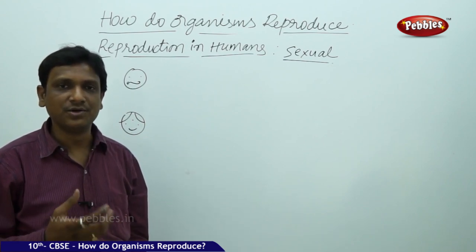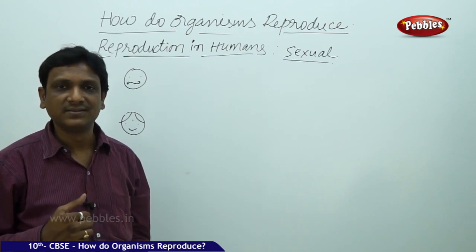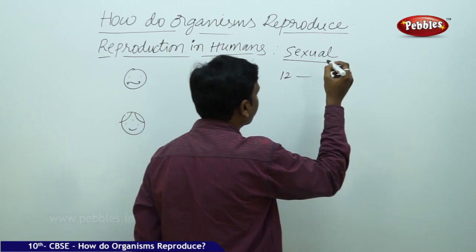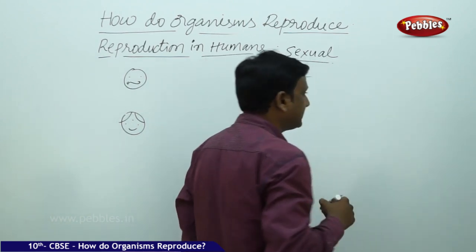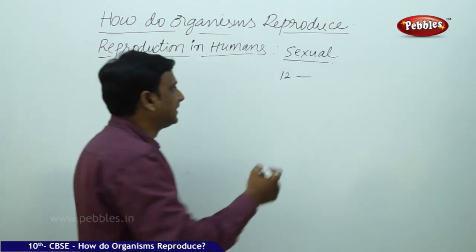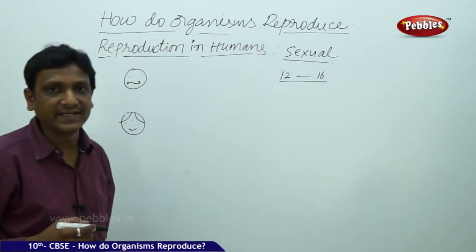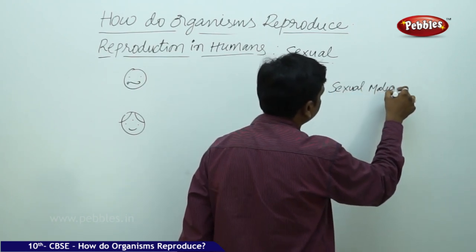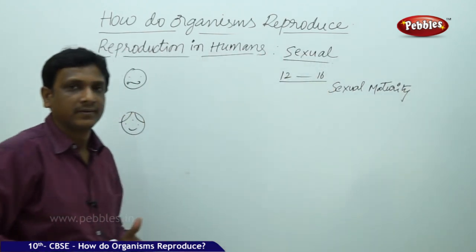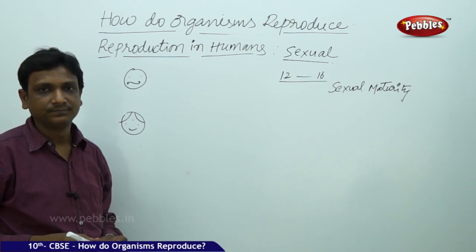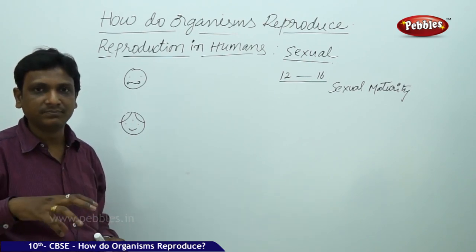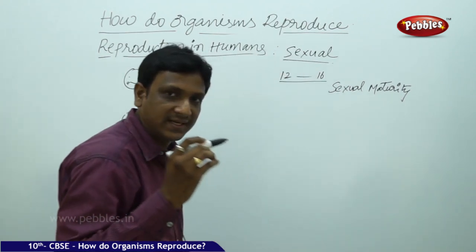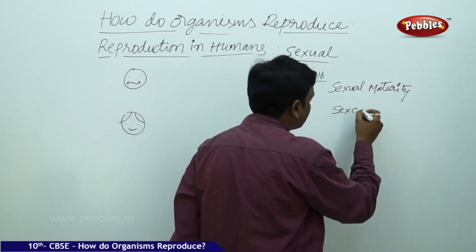Zero to two years are infants; after teens, around 12 to 16 years, we call them adolescents. During this period, at around 16 or 17 years, they attain sexual maturation or sexual maturity. Sexual maturity means the sexual organs mature and become ready to produce reproductive cells. An organism that has attained sexual maturity is able to produce sex cells — germ cells.